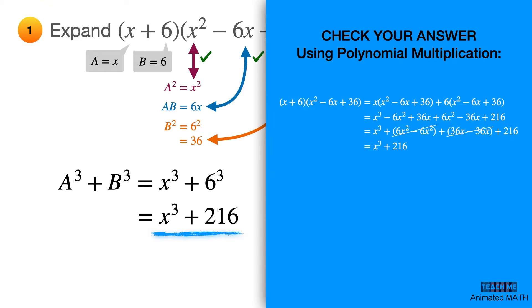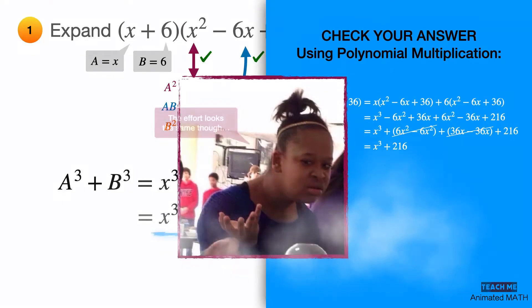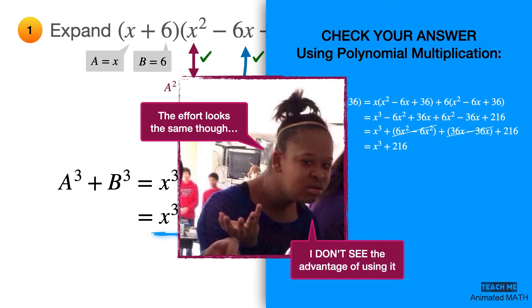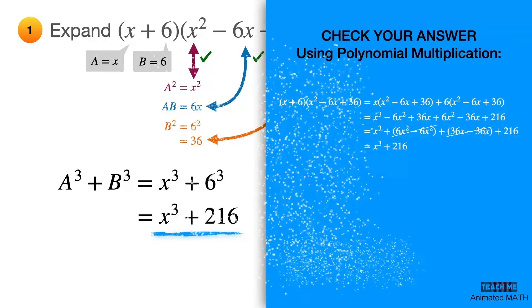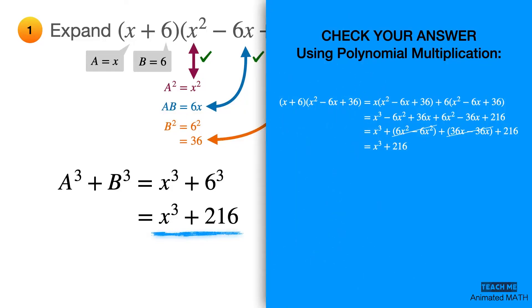But of course, some of you might think, hmm, the amount of effort kind of looks similar though. I don't really see the advantage of using the sum of two cubes formula over basic polynomial multiplication. To be fair, that is indeed true, because this is a very simple and straightforward application. So let's try a more difficult example.